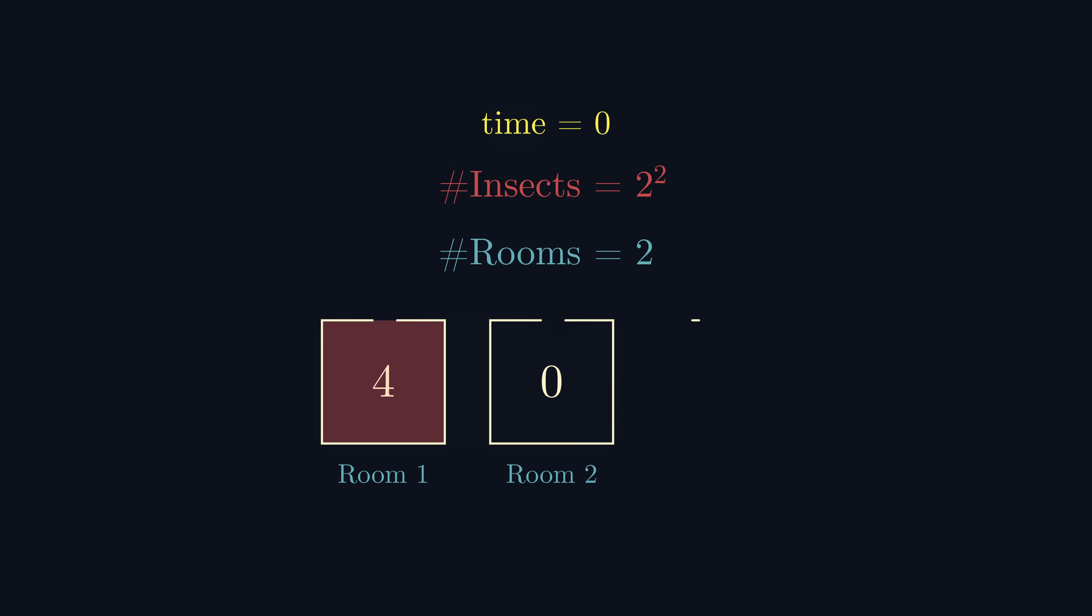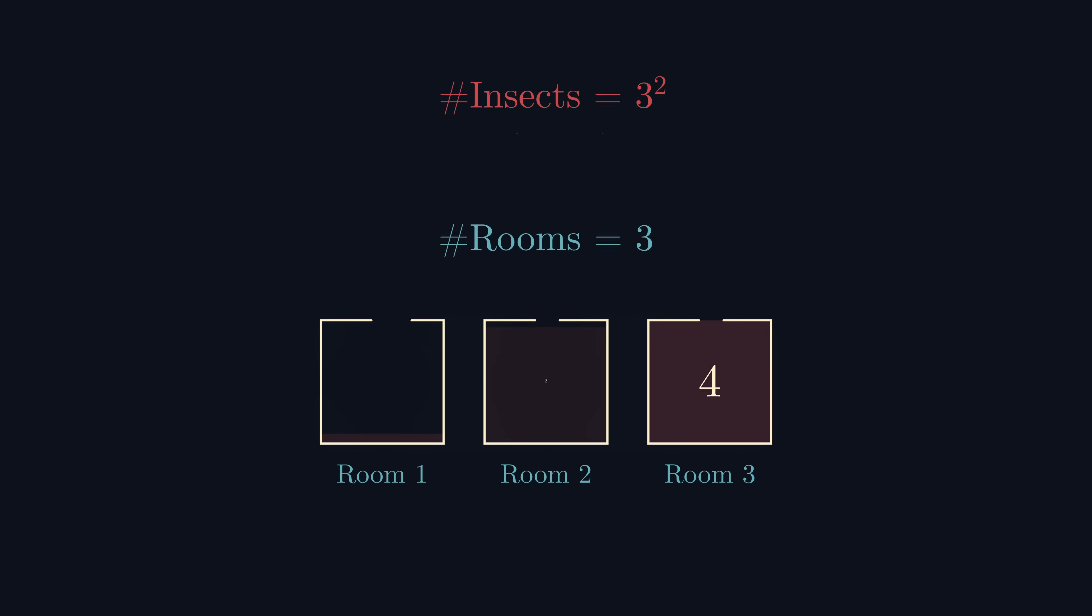We should see if this pattern continues with three rooms and three squared insects. It's pretty clear that the number of starting configurations grows quite quickly, but it doesn't hurt to look at an example.